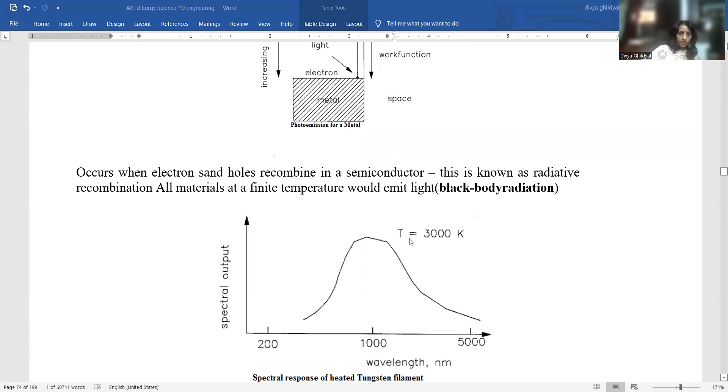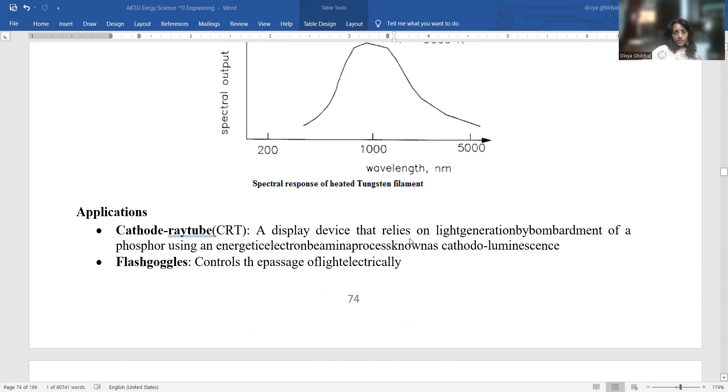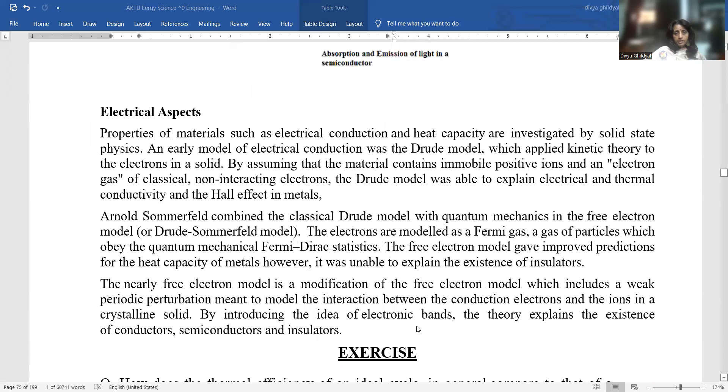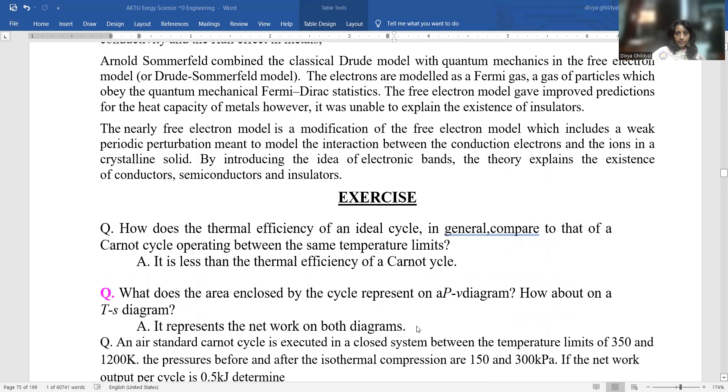Black body radiation holds for black bodies which absorb all radiations and emit none. Cathode ray tube is a device that relies on light generation by bombardment of a phosphor using an energetic electron beam process. Electrical aspects: properties of materials such as electrical conduction and heat capacity are investigated by solid state physics.